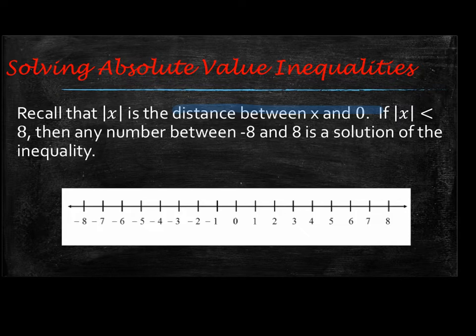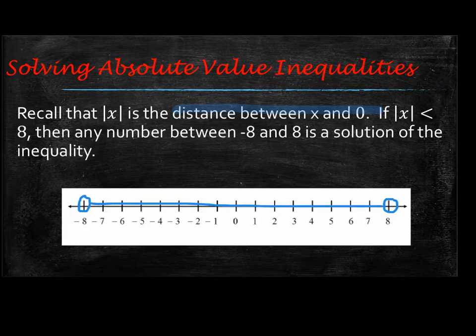because at negative 8 and positive 8, the absolute value of both of those equals 8. So if we want it to be less than 8, it's going to be everything on the inside. That's going to become clearer when we work through some examples, but you need to understand that there are two values that can be inside the absolute value bars to get that positive value of 8.